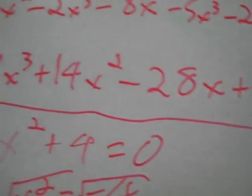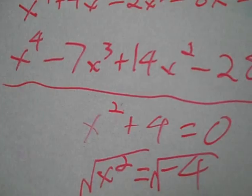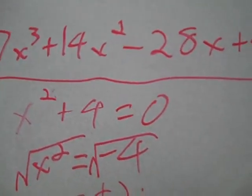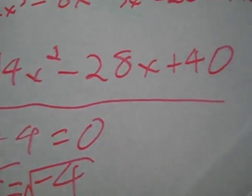Then you add like terms together and you get the answer: x to the 4th minus 7x cubed plus 14x squared minus 28x plus 40.